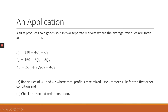The question says: if a firm produces two goods sold in two separate markets where the average revenues are given as P1 = 130 − 4Q1 − Q2, P2 = 160 − 2Q1 − 5Q2, and the total cost = 2Q1² + 2Q1Q2 + 4Q2², find the values of Q1 and Q2 where total profit is maximized.